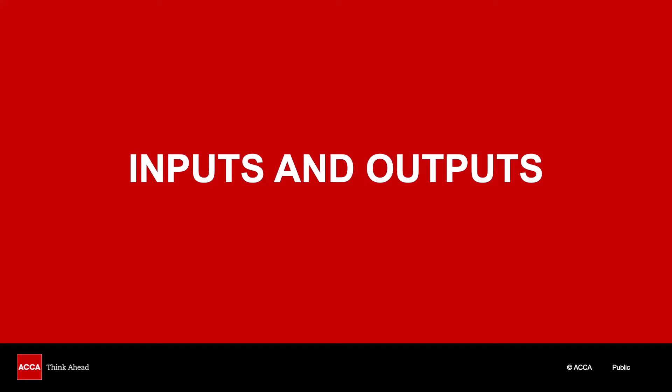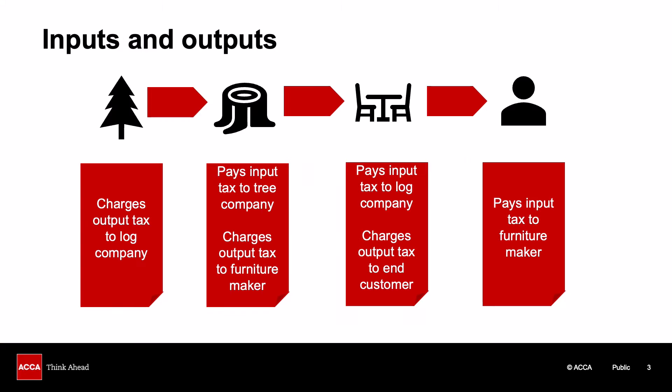First of all, let's quickly recap the core principles of VAT, namely the concept of input and output taxes, which is also one of the first pieces of terminology we need to clarify. Let's imagine we're running a furniture business selling handcrafted wooden tables and chairs to individuals for their homes. We need to purchase wood in order to make the tables and chairs. When we buy the wood from our suppliers we may have to pay VAT, called input tax, and when we sell items to our customers we may have to charge VAT on the sale price — this is known as output tax.